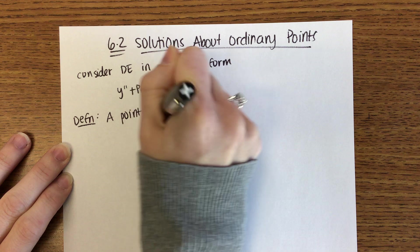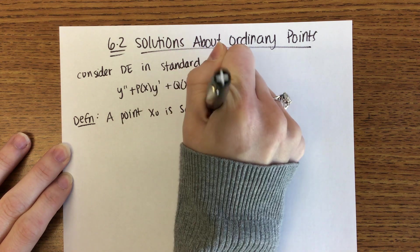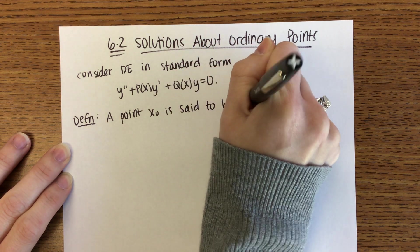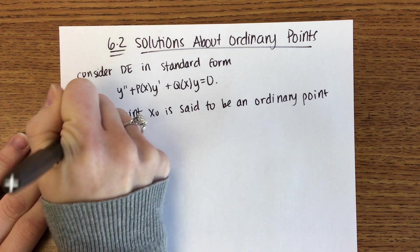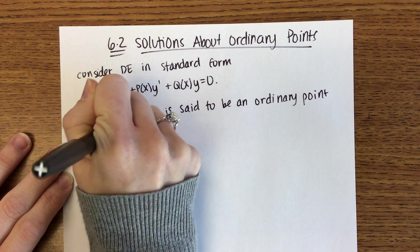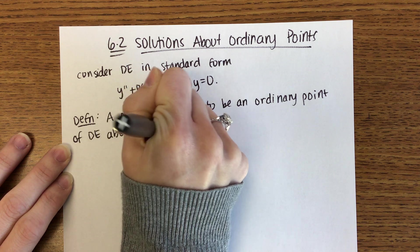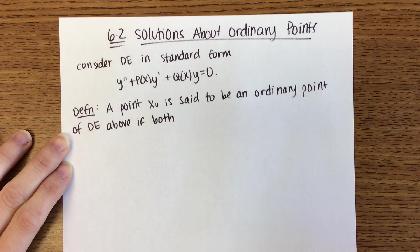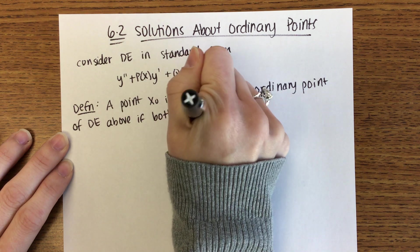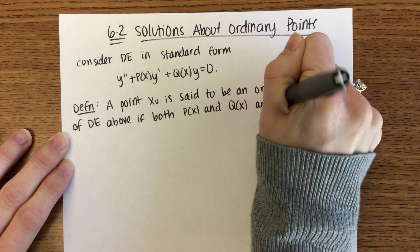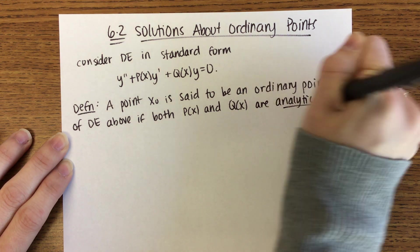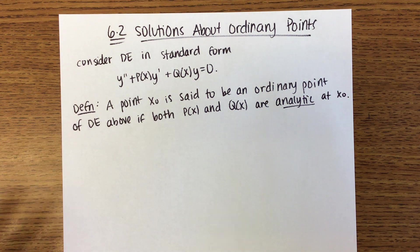A point x-naught is said to be an ordinary point of the above differential equation if both p of x and q of x are analytic at x-naught. In the video I said you don't need this definition yet, but you're going to need it later — that was the later part.